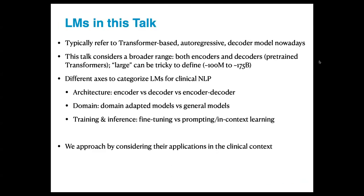To start, we want to first define the scope of what we mean by large language models. Typically, LLMs tend to refer to transformer-based decoder models that are autoregressive, meaning they take context on the left to predict something on the right. In this talk, we consider a broader range of language models — both encoders and encoder-decoders — and treat 'large' flexibly, ranging from several hundred million to seven hundred billion parameters. Instead, we approach LLMs in clinical context by mainly considering their applications.